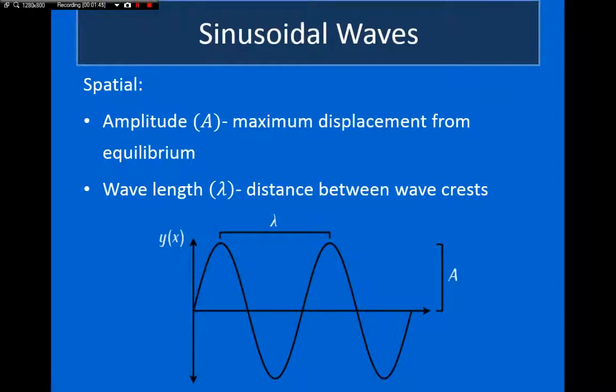So, how do we describe sinusoidal waves? Well, as far as the spatial displacement of the waves is, the maximum displacement from equilibrium, so this line down here represents equilibrium, the maximum distance the particle is displaced from equilibrium is called the amplitude, which I have written down here.